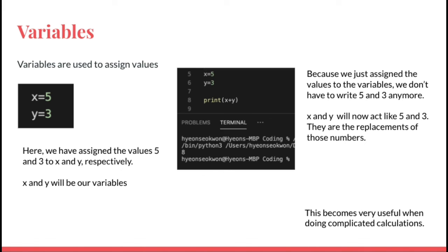So in the image below, we assign values to the variables and then instead of writing 5 and 3, we wrote x and y. But the console successfully printed 8 because the variables were a replacement of the numbers.